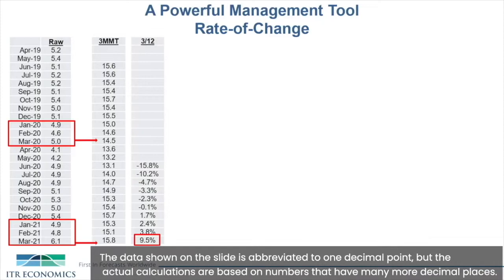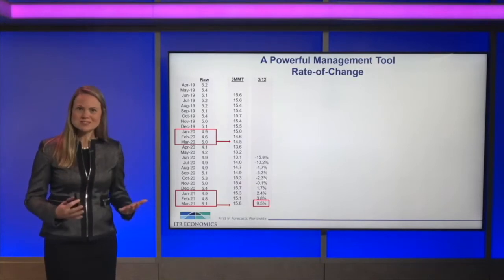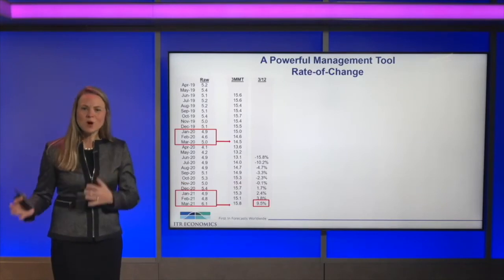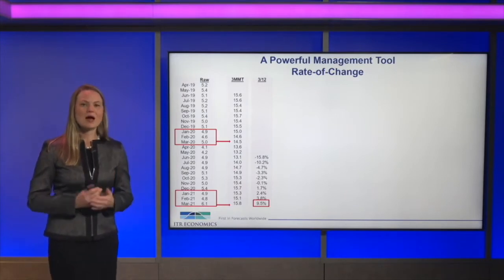Once I have this monthly total, I can calculate my first rate of change — I call that a three over twelve rate of change. The three stands for three months of data, and over twelve means I'm always comparing back twelve months, or one year. So in this example, I'll take my March 2021 three-month moving total and compare it back to the March 2020 three MMT. This tells me I sold 9.5% more in the last three months than in the same three months one year ago. Going back one year removes any seasonality — comparing busy season to busy season, slow season to slow season — giving a more apples-to-apples comparison.